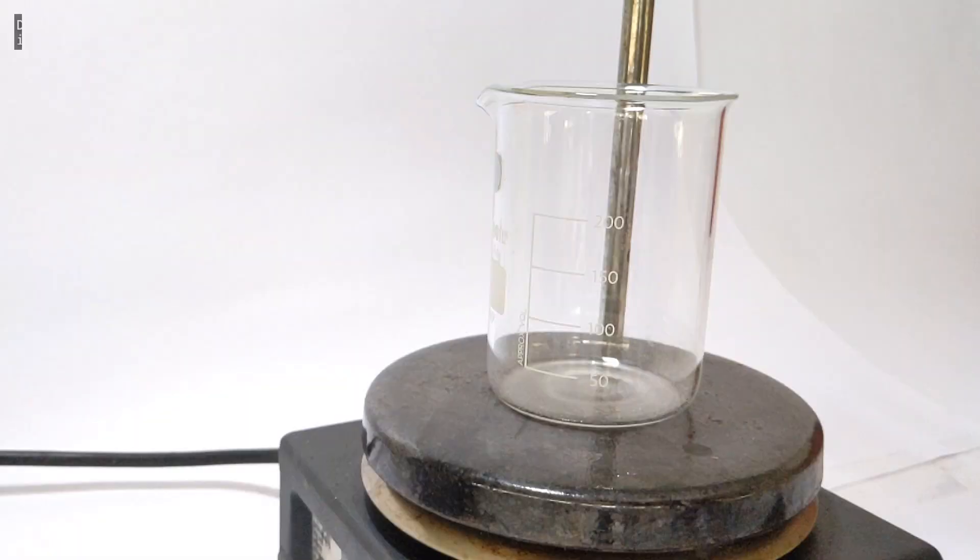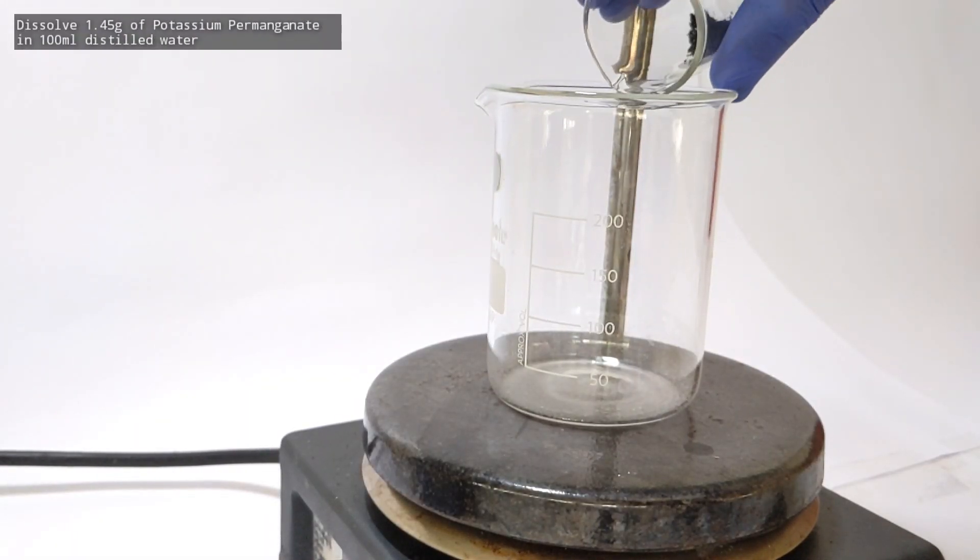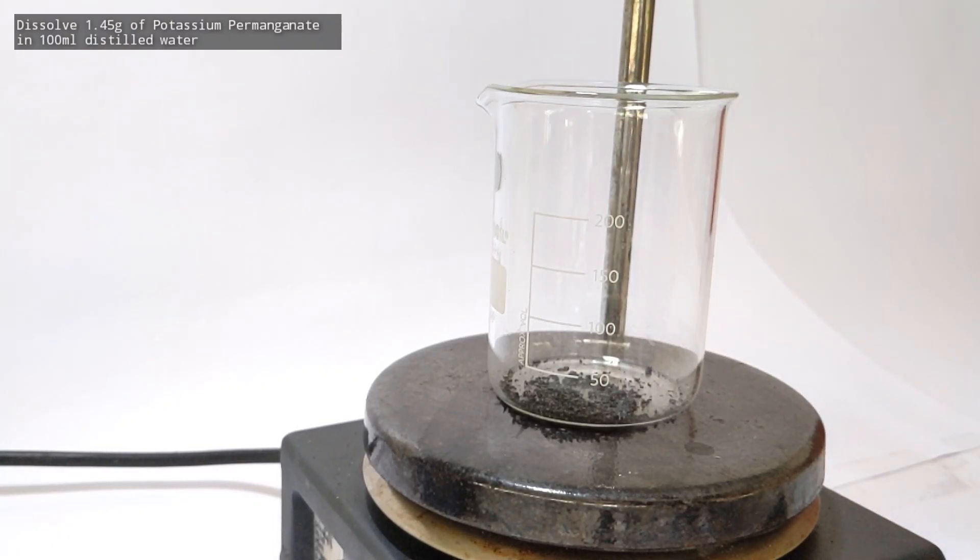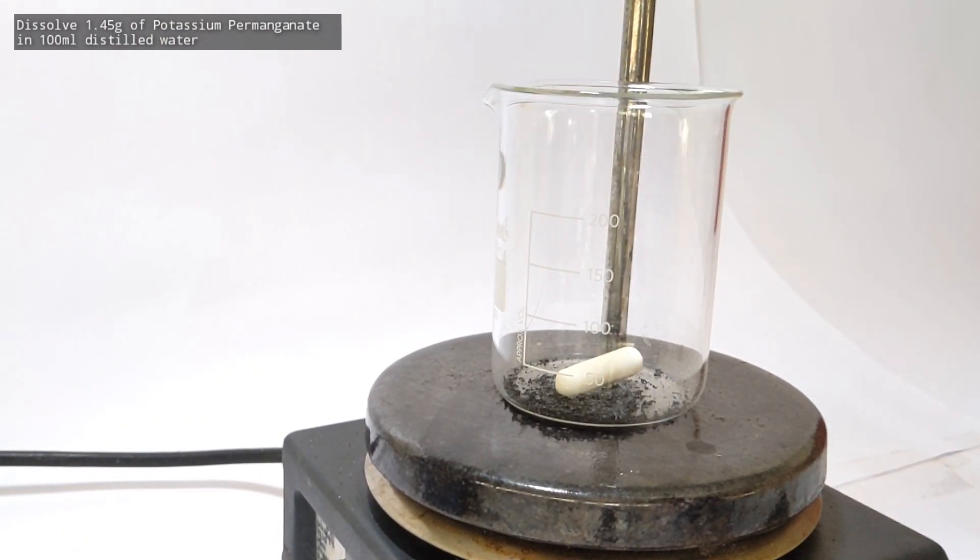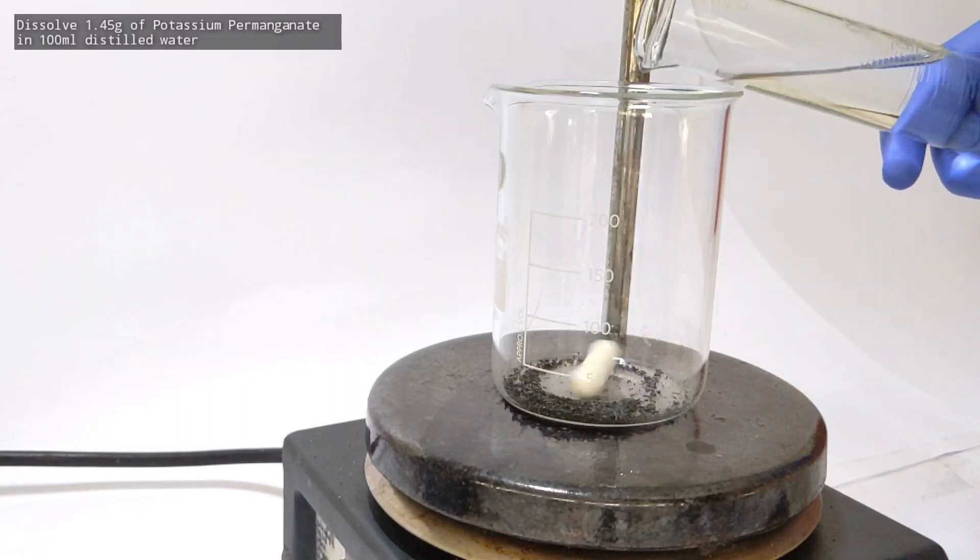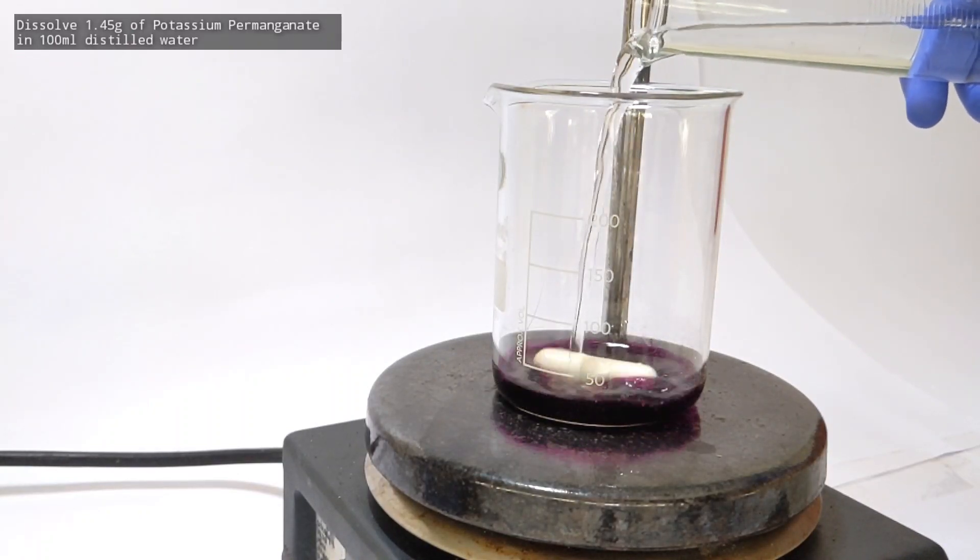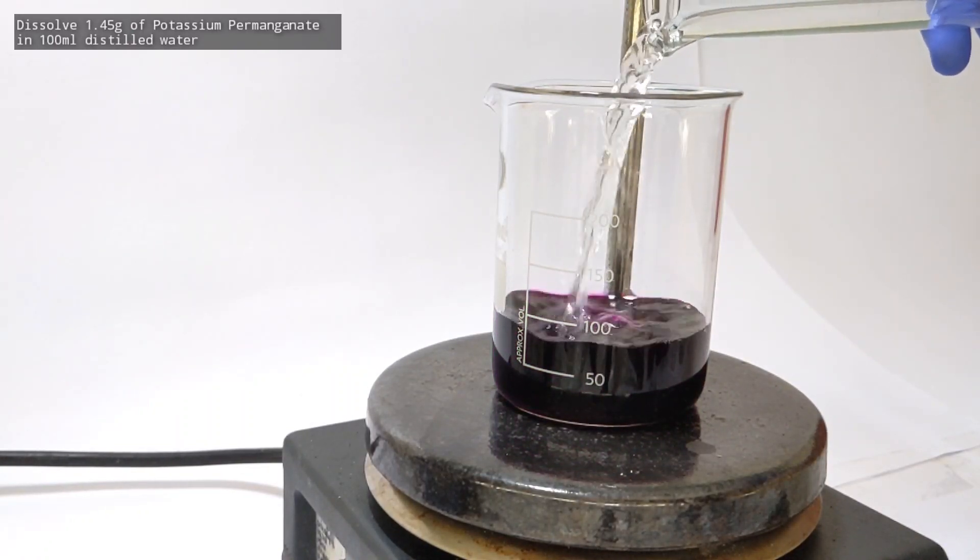Now we have to dissolve the potassium permanganate. Transfer it to the 250 milliliter beaker which is placed on a hot plate stirrer. A stirring bar was added and then with stirring, 100 milliliters of distilled water was added to dissolve the compound. The solution acquires a very dark purple color. We have to continue stirring for a longer duration.